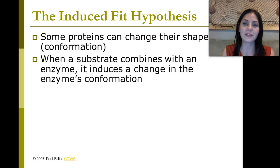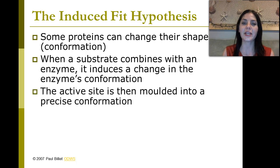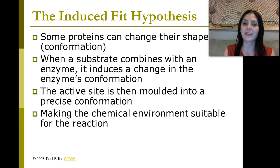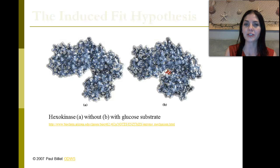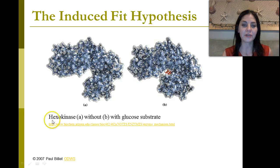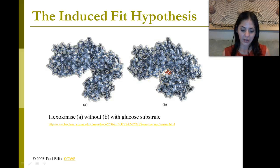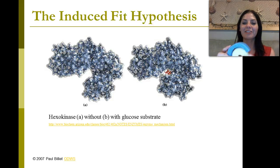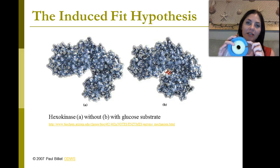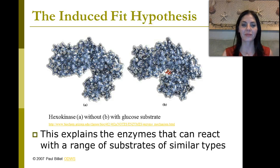We have the induced fit hypothesis. This means that some proteins slightly alter their shape or conformation to fit around their substrate. When a substrate combines with an enzyme, it induces a change in the enzyme's conformation. The active site is then molded into the precise conformation, making the chemical environment suitable for the reaction. The bonds of the substrate are stretched to make the reaction easier, and it lowers the activation energy. Here we have hexokinase with and without glucose substrate — it slightly alters its shape for the glucose, gives it a nice little hug. When the substrate enters, it slightly alters the shape of the enzyme, and the enzyme kind of hugs and conforms to the substrate. This explains that enzymes can react with a range of similar substrate types.